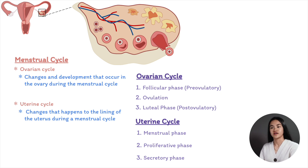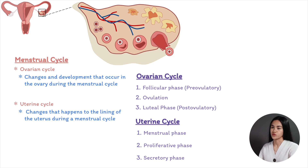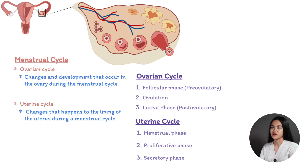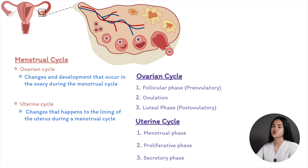Day 14 is when ovulation occurs, separating the follicular phase and luteal phase. From day 15 to day 28 is the luteal phase of the ovarian cycle and the secretory phase of the uterine cycle.